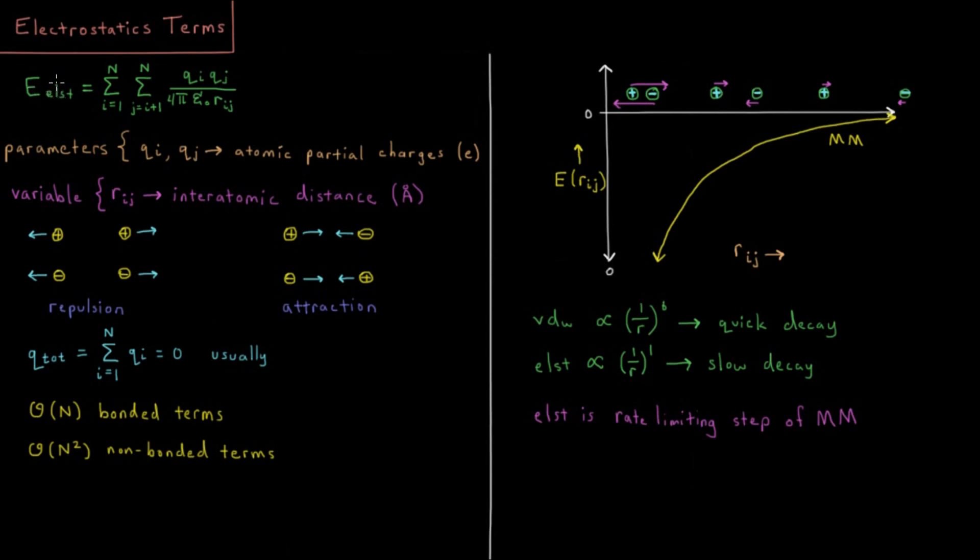The electrostatic term is designed to model the electrostatic interactions between our various atomic particles. Remember, each of our atoms is represented as a single point particle with X, Y, and Z coordinates.